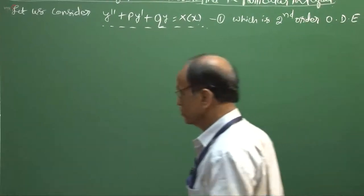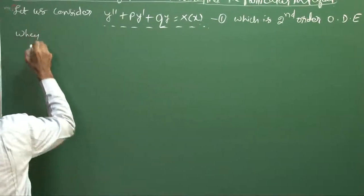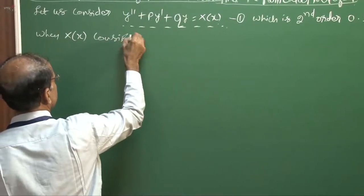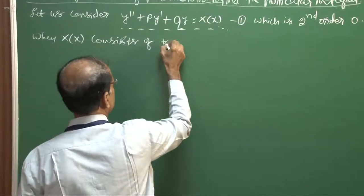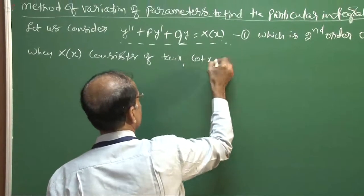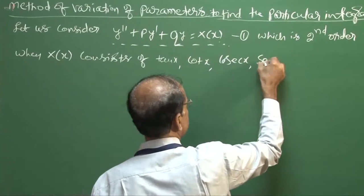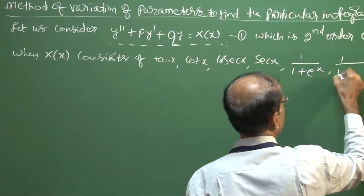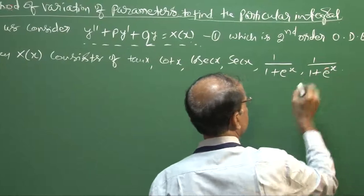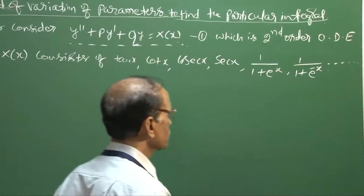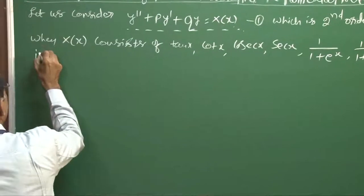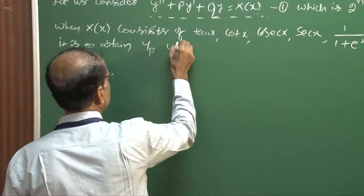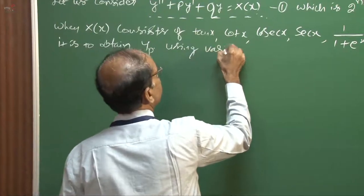This is a second order ODE. We apply variation of parameters when X(x) consists of functions such as tan x, cot x, cosec x, sec x, 1/(1 + e^x), 1/(1 + e^{-x}), and similar terms. In these cases, we obtain the particular integral y_p using variation of parameters.